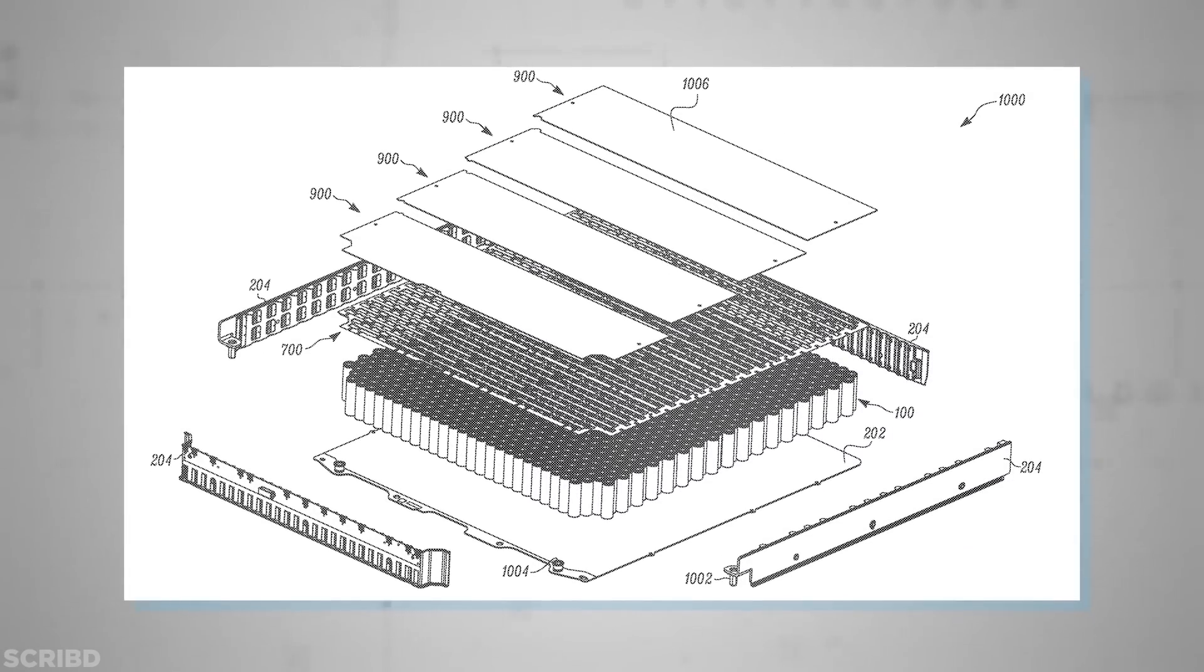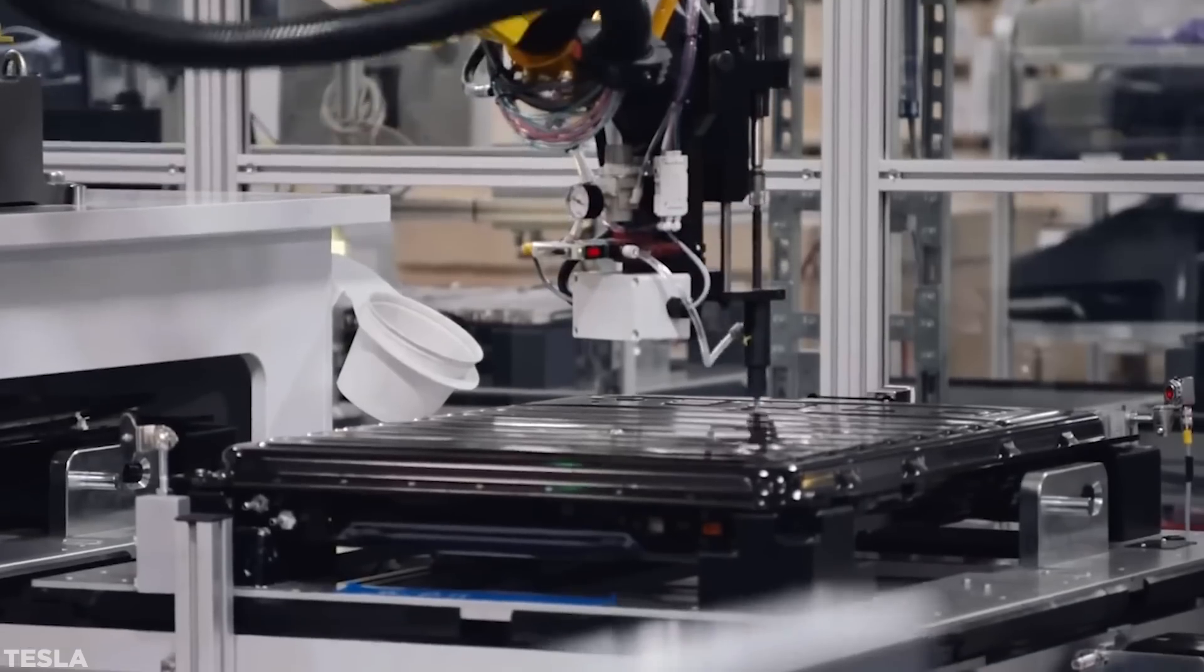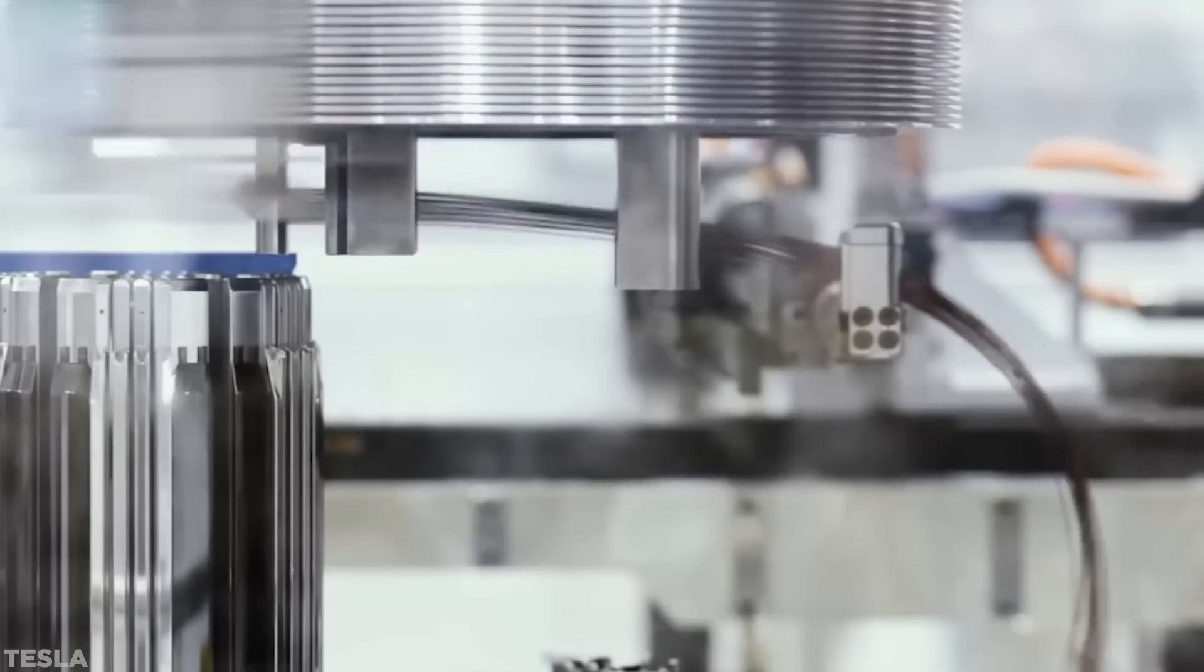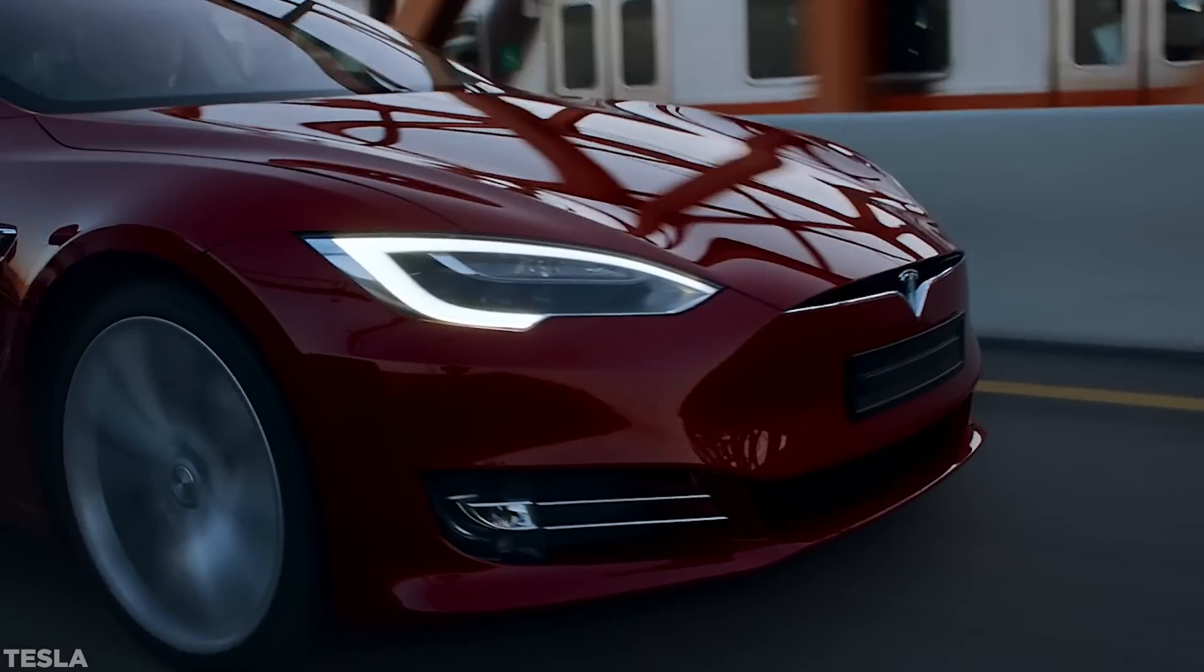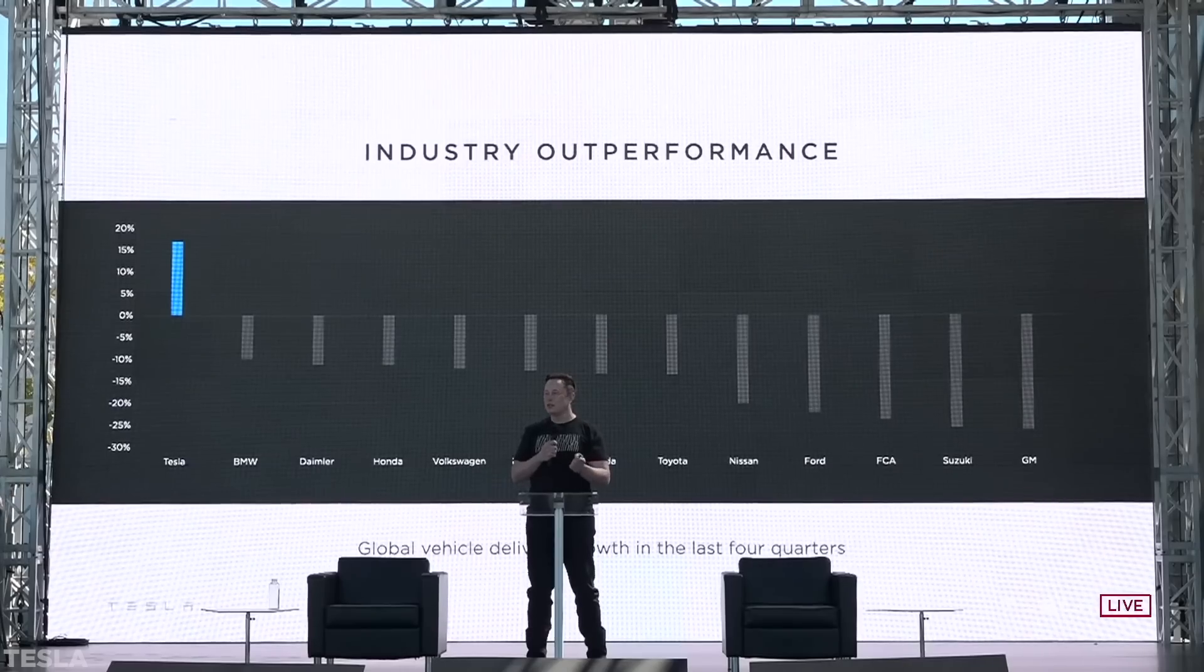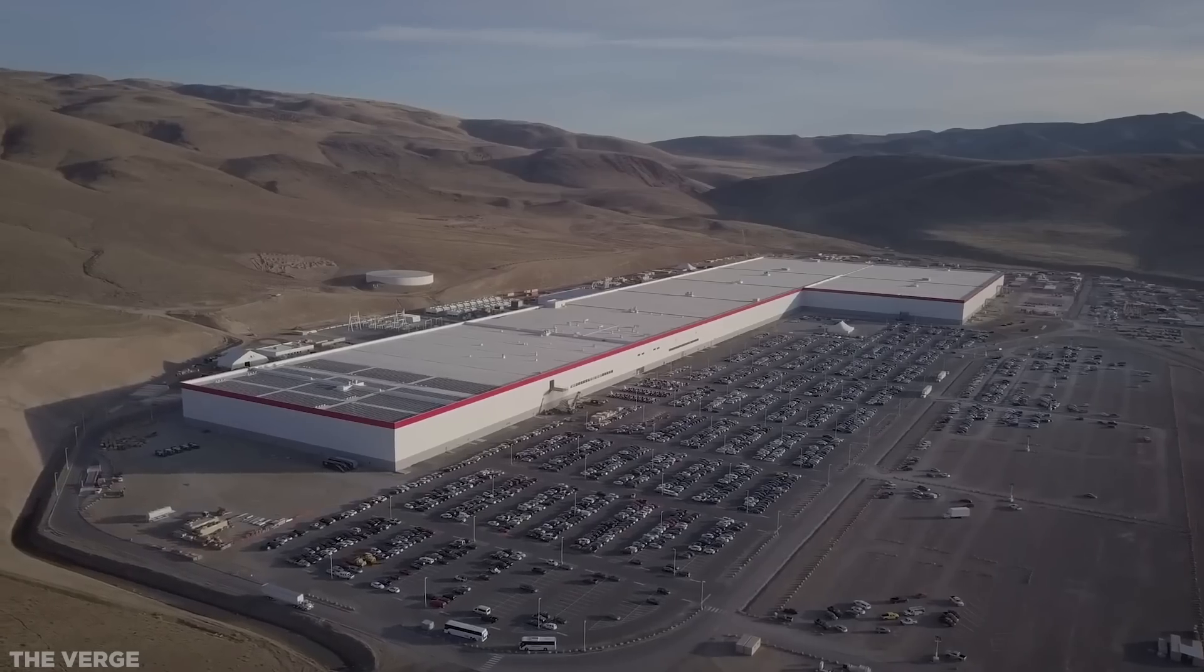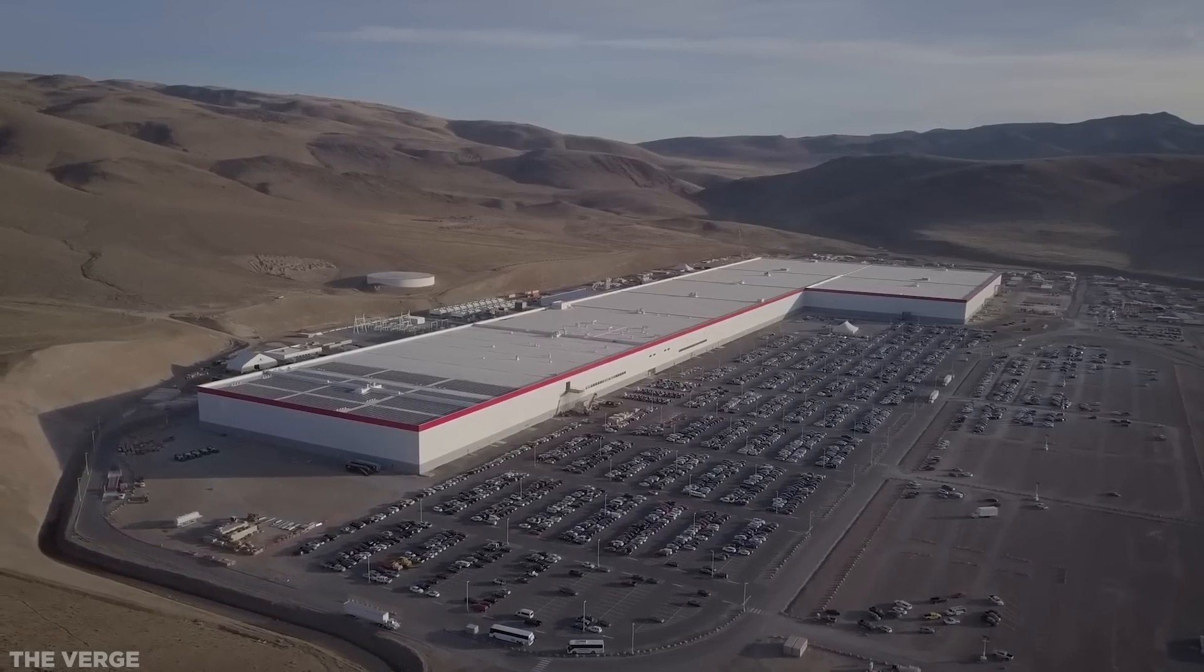Earlier this year, Tesla CEO Elon Musk filed a patent for a new type of battery which would revolutionize the electric automotive industry by combating some of the biggest fears belonging to skeptics: range anxiety, charging times, and so on. A little later into the year, he took to the stage on what became known as Battery Day, a day filled with more promises than finished products, but nonetheless an exciting step in the right direction for the company.